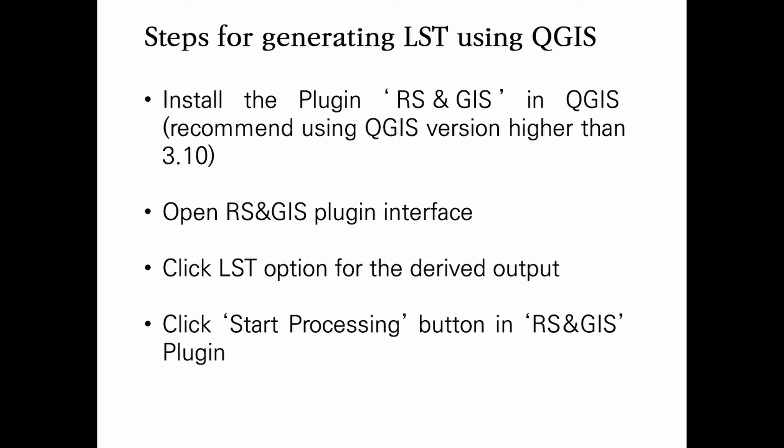There are multiple steps for generating LST using QGIS. QGIS provides a plugin named RS and GIS for generating LST using Landsat band. First of all, install the RS and GIS plugin in QGIS. I recommend using QGIS version 3.10 or higher for installing this plugin. After the plugin is installed, open the RS and GIS plugin interface. Next, click the LST option for the derived output. Finally, click the Start Processing button in the RS and GIS plugin.